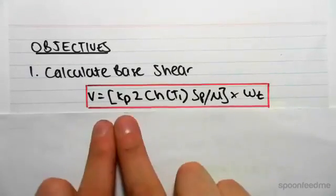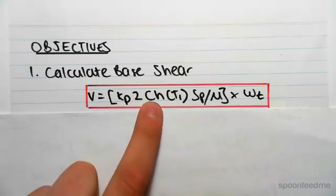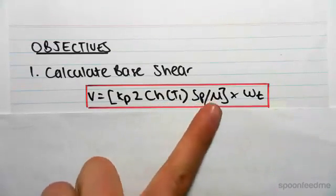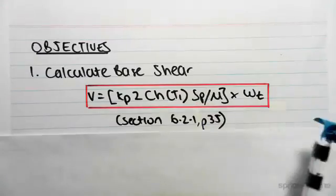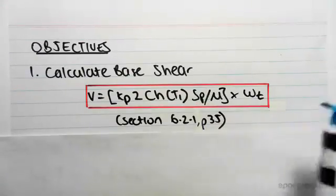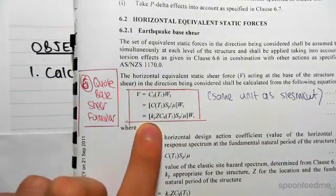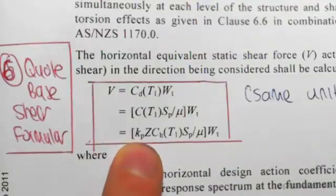To recall, the equation for base shear is V equals kpz Ch of T1, Sp over μ, times the seismic weight. This is from section 6.2.1, page 35. I've just written it out in big writing.